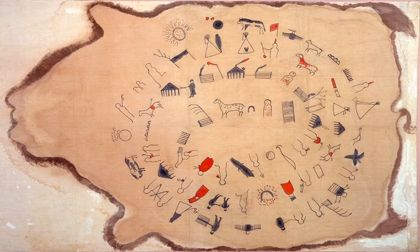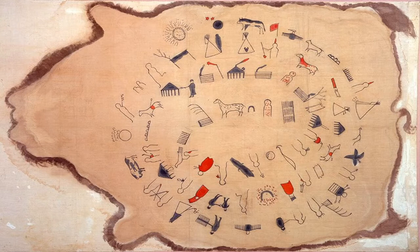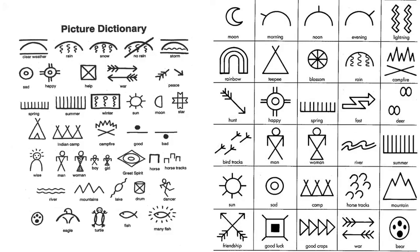The winter count in this picture is of the Lakota tribe and tells the story of the tribe from 1800 to 1871, including such events as war, great hunts, disease, and encounters with both other tribes and Anglo settlers. Using these symbols, make your own winter count story about significant events that have taken place in your life this year.